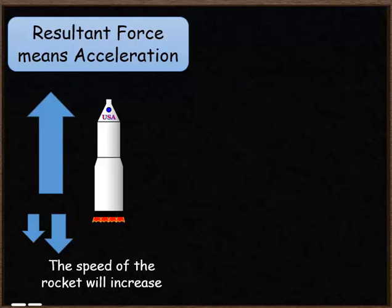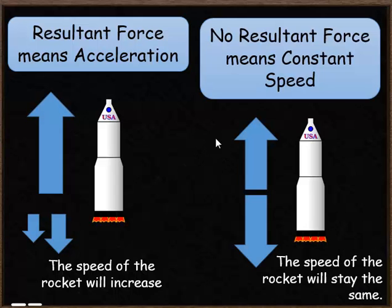Looking at the rocket on screen: it has an upwards force generated by the reaction when the fuel is pushed out, and two forces going downwards — gravity and air resistance. The rocket has a larger force going upwards, meaning it's going to increase its speed in the upwards direction — it's going to be accelerating. If the forces were balanced — the same size — there would be no change in speed. The rocket would stay at the same speed, whether it's moving or stationary.